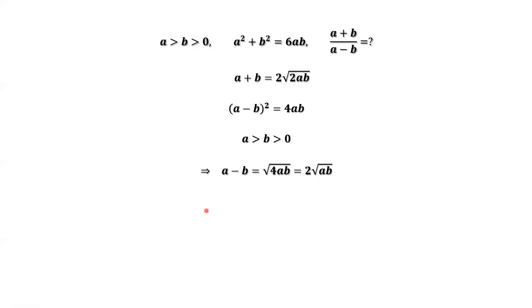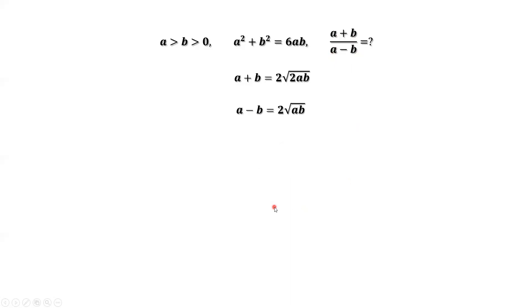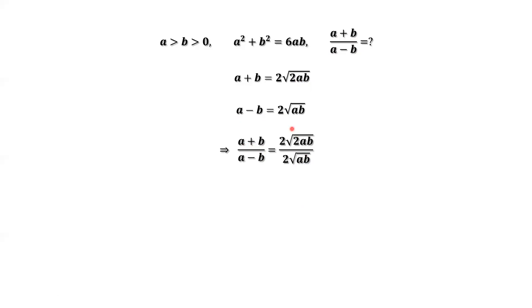Now we are ready to derive the answer for the fraction A plus B over A minus B. We replace A plus B by 2 times the square root of 2AB, and A minus B by 2 times the square root of AB. Simplifying the right-hand side gives us the square root of 2. So A plus B over A minus B equals square root of 2, which is the final answer.